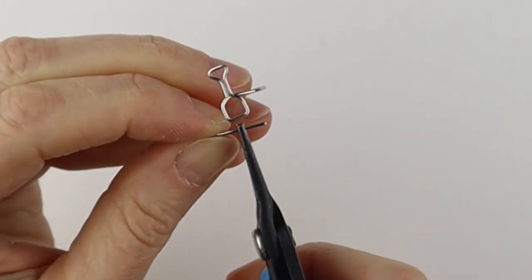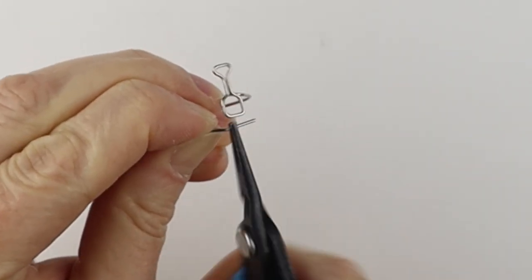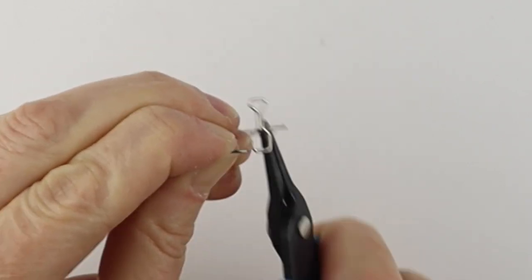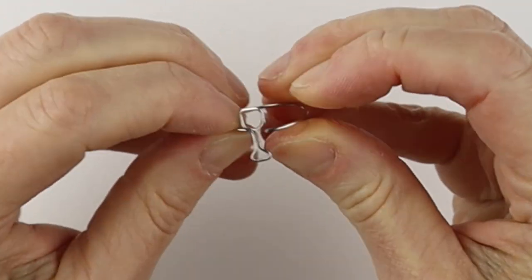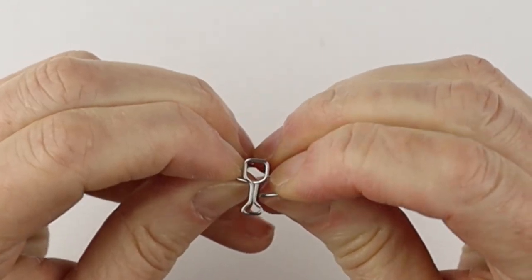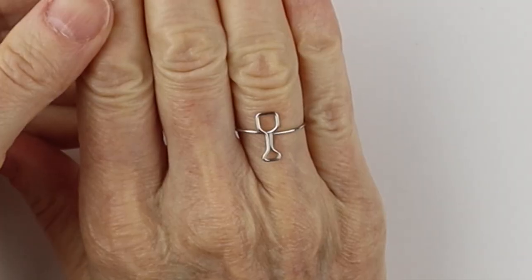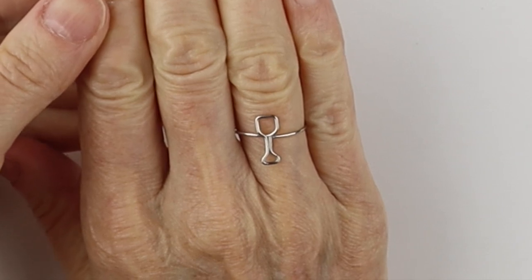Take your flat pliers and just wiggle it back and forth. It'll snap. Just push it down there. Wiggle it until it's flush. And there you have your super cute little wine glass ring.